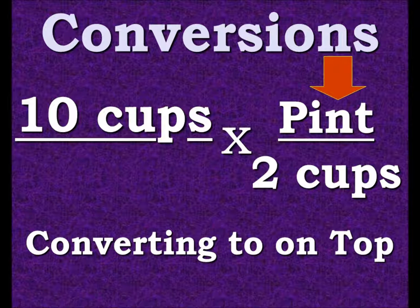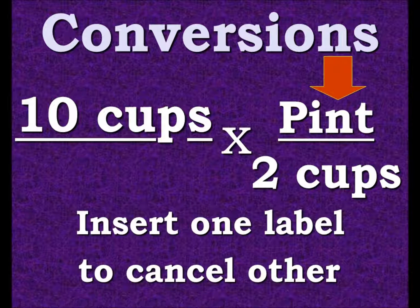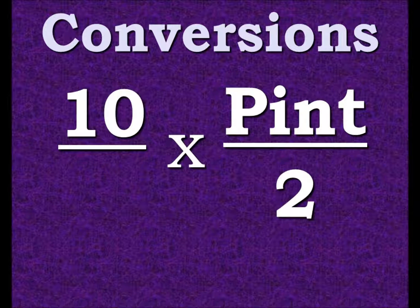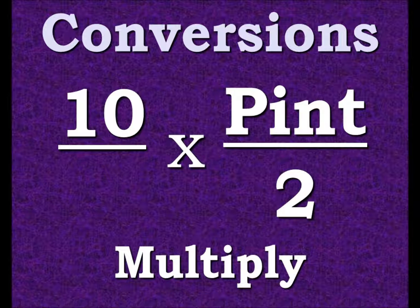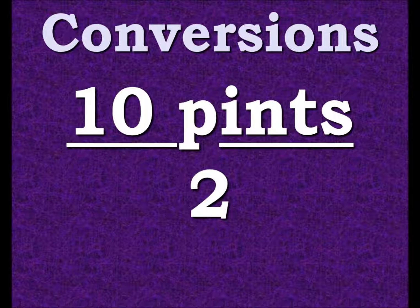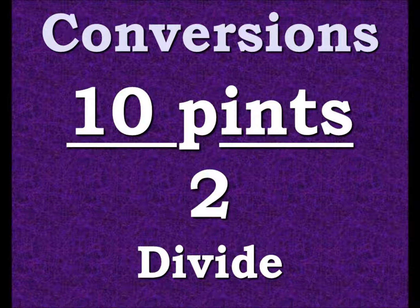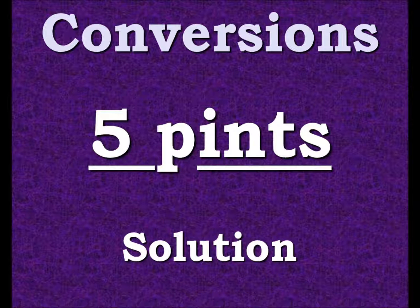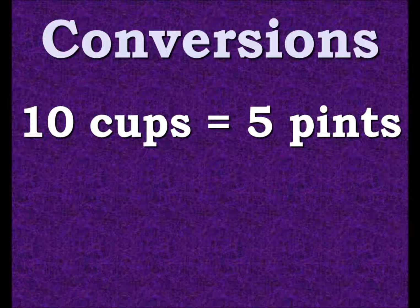Again we're inserting one label to cancel another, so the cups cancel out. Now we multiply and end up with 10 pints over two, then we divide. That gives us five pints. So 10 cups equals five pints.